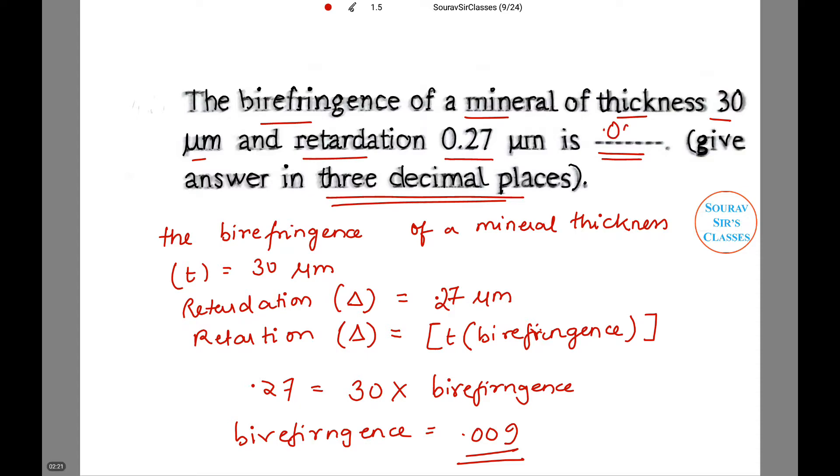So 0.009 will be the answer, which is the birefringence of a mineral with the thickness that we have denoted as t equals 30 μm and retardation, which is delta, is 0.27 μm.